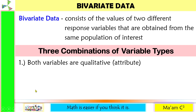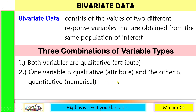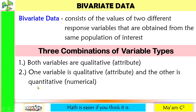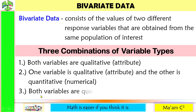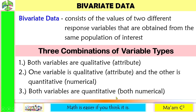Another possible combination: one variable is qualitative and the other is quantitative, meaning numerical. For example, the qualitative variable is sex (male or female), and the quantitative variable is their height. The last possible combination is when both variables are quantitative — both are numerical — for example, age and height.